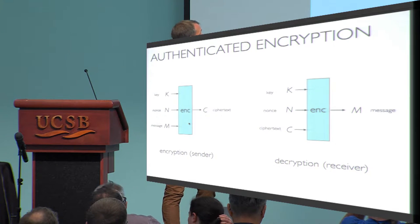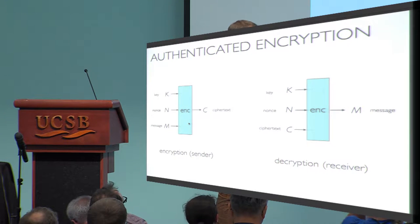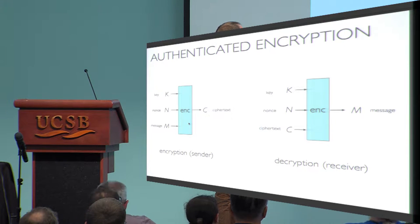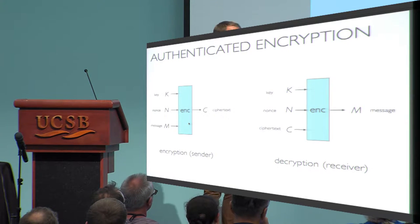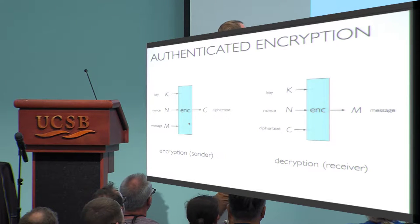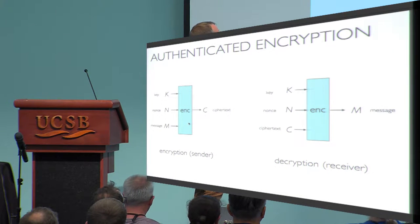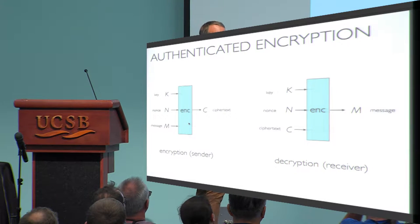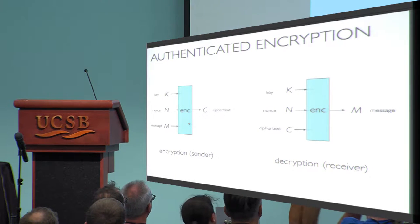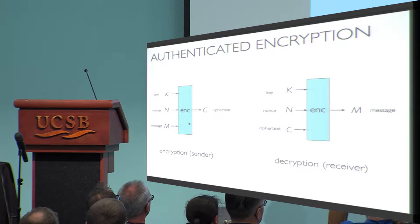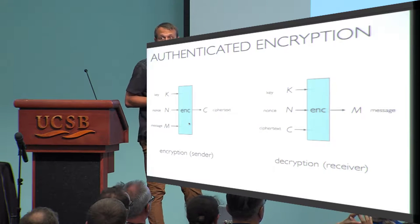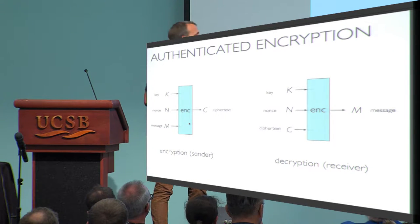Nonce-based authenticated encryption has two algorithms: encryption and decryption. Both take the key; encryption also takes the message and a nonce. As long as the nonce is unique, this achieves a good notion of security. The nonce just has to remain unique until we switch the key — it doesn't need to be random. Decryption takes the key, nonce, and ciphertext to generate a message or an error symbol.